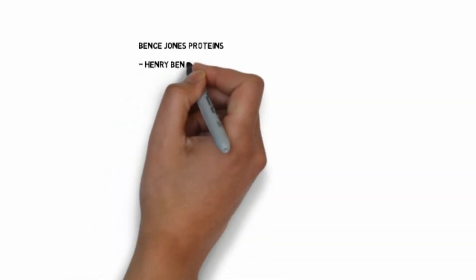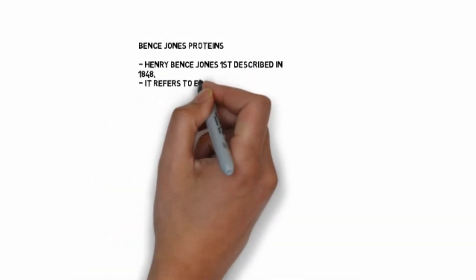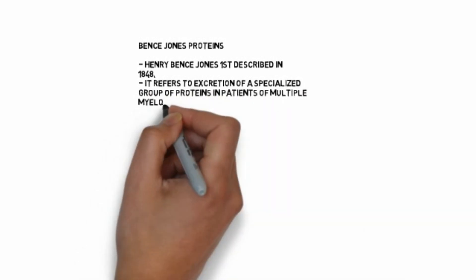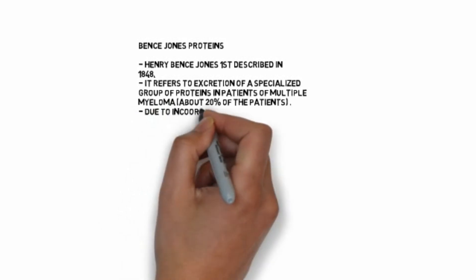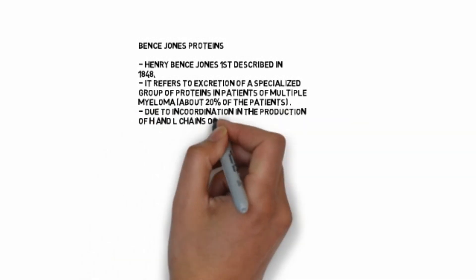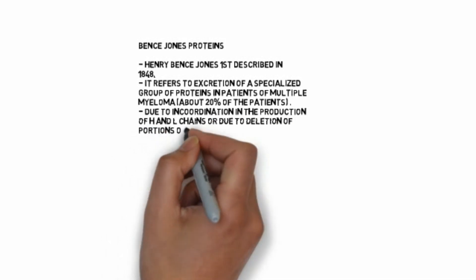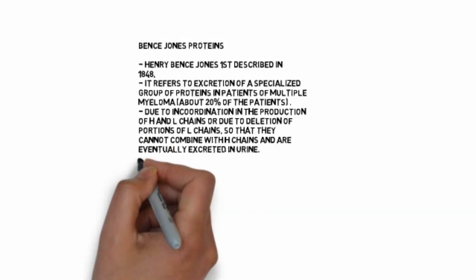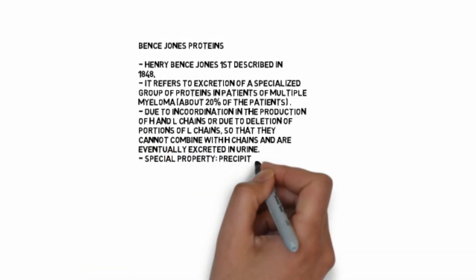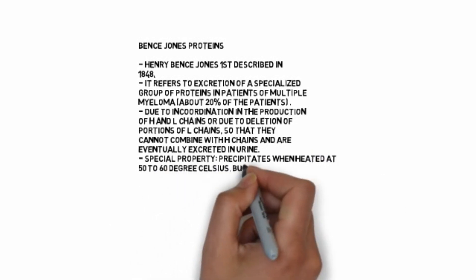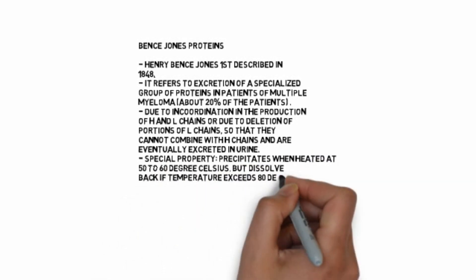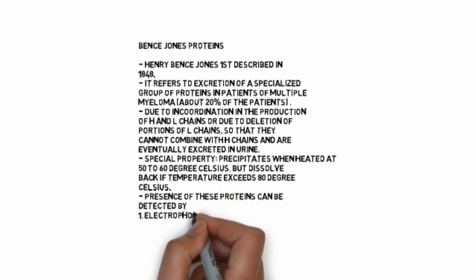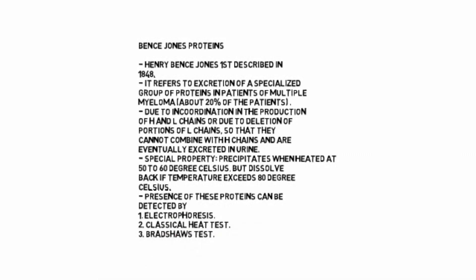Bence Jones protein: Henry Bence Jones first described it in 1848. It refers to excretion of a specialized group of proteins in patients of multiple myeloma, about 20 percent of patients. Due to incoordination in production of H and L chains or due to deletion of portions of L chains so that they cannot combine with H chains, they are eventually excreted in urine. Special property: precipitates when heated at 50 to 60 degrees Celsius but dissolves back if temperature exceeds 80 degrees Celsius. Presence of these proteins can be detected by electrophoresis, classic heat test, or Bradshaw's test.